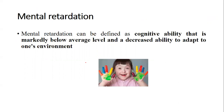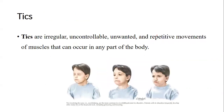There are four options. First, mental retardation — cognitive ability markedly below average level. Second option: tics — irregular, uncontrollable, unwanted, and repetitive movements of muscles that can occur in any body part, such as lip movements, eye blinking, or neck movements.